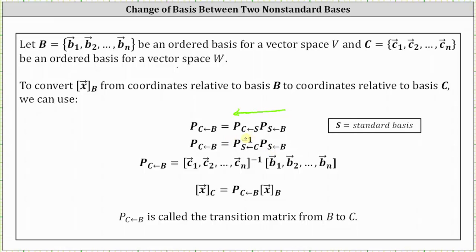The inverse of the transition matrix from C to S equals the inverse of the matrix formed using the basis vectors from set C, and the transition matrix from B to S equals the matrix formed using the basis vectors from set B. This product gives us the transition matrix from B to C, so the coordinates of vector X relative to basis C equal the transition matrix from B to C times the coordinates of vector X relative to basis B.